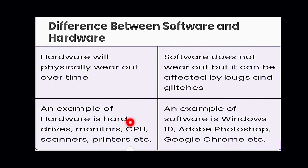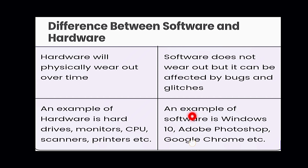Hardware will physically wear out over time, while software doesn't wear out but can be affected by bugs and glitches. An example of hardware includes hard drive, monitors, CPU, scanner, printer, etc. Examples of software include Windows 10, Windows Vista, Macintosh operating system, Adobe Photoshop, Google Chrome, and MS Office.